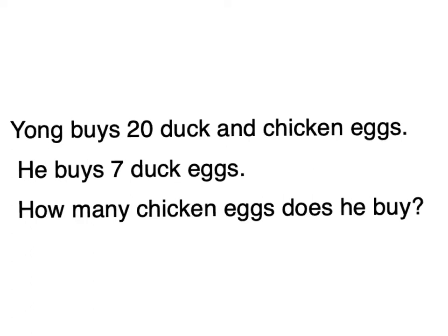Let's start by reading the word problem. Yong buys 20 duck and chicken eggs. He buys seven duck eggs. How many chicken eggs does he buy?